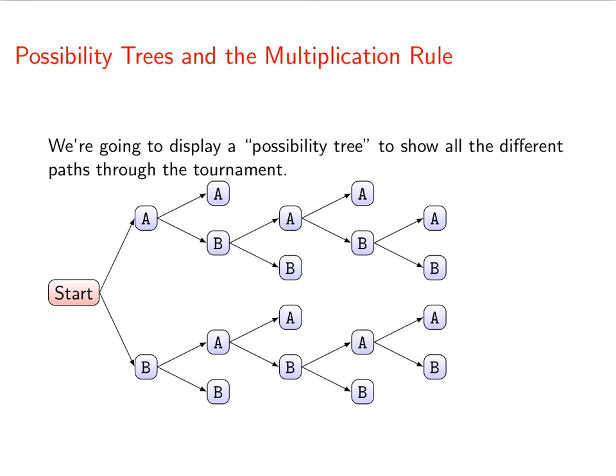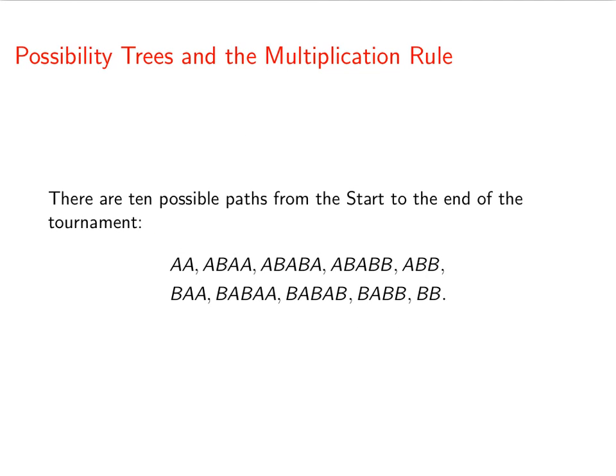Alright, so this shows all the different paths through the tournament. So there are ten possible paths from the start to the end of the tournament. And here we've listed them all. AA, ABAA, ABABA, ABABB, ABB, BAA, BABAA, BABAB, BABB, BB. It's difficult to count these out without listing what we've shown as a possibility tree to show all the different options.